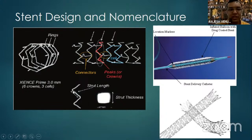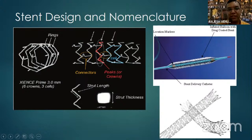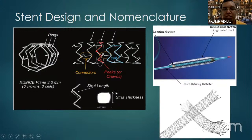The zigzag corners of the struts are called crowns, and these crowns are interconnected with connectors. When a crown is interconnected via connectors in a closed lattice structure, it forms a cell. Multiple cells together form a complete ring. So the hierarchy is: struts → crowns → connectors → cells → rings. Based on how the connectors and rings are attached, there are multiple stent designs depending on clinical requirements.